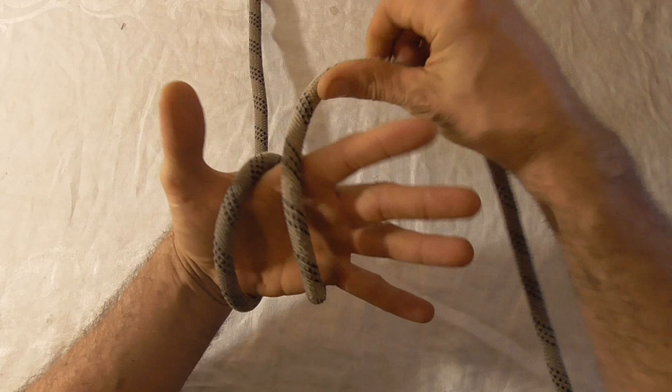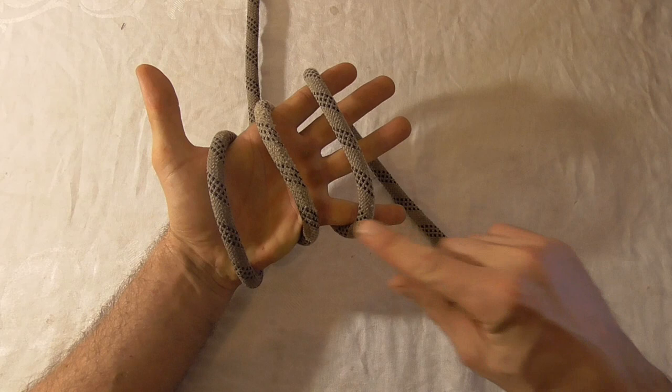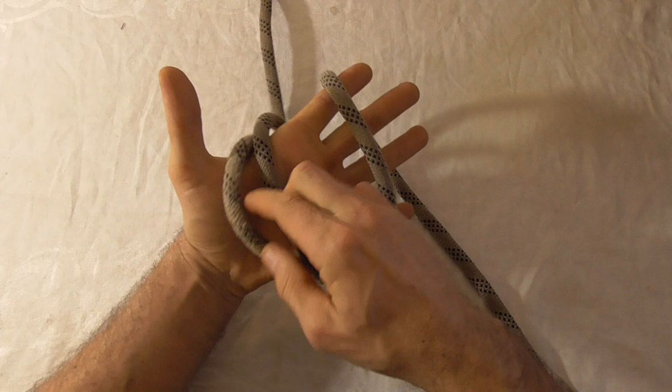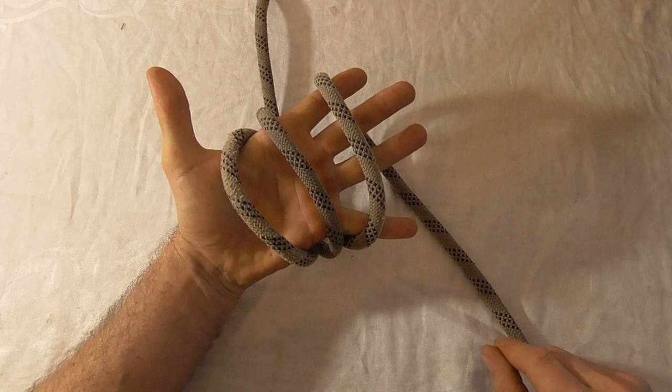So you just want to place the rope over your palm and then wrap your hand three times, and then take the wrap that's closest to your thumb and place it in the center of your palm.